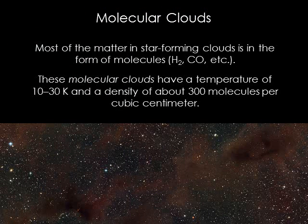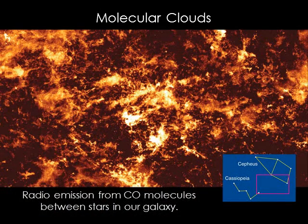Stars are born in particularly cold and dense interstellar clouds known as molecular clouds. Within these clouds, atoms are able to combine together into molecules like carbon monoxide, ammonia, ethyl alcohol, and molecular hydrogen. The molecular hydrogen is actually difficult to detect, but we can study molecular clouds by looking for the carbon monoxide. There is not a lot of it, but it does produce radio emission lines that allow us to map structures in the clouds.